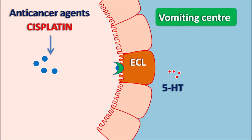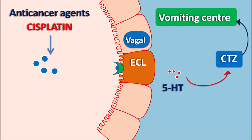The released 5-HT can act on two important centers within the CNS: the vomiting center and the chemoreceptor trigger zone (CTZ). Serotonin can directly activate the CTZ by acting on the area postrema. When the CTZ is activated, it sends signals to the vomiting center, inducing nausea and vomiting. The released 5-HT can also act on the vagal neurons via 5-HT3 receptors, which send signals to the vomiting center, again resulting in nausea and vomiting.